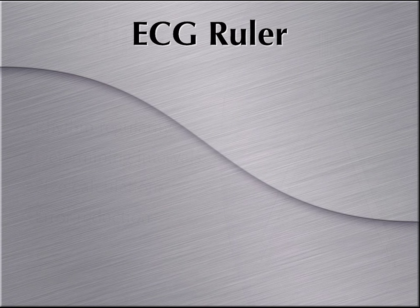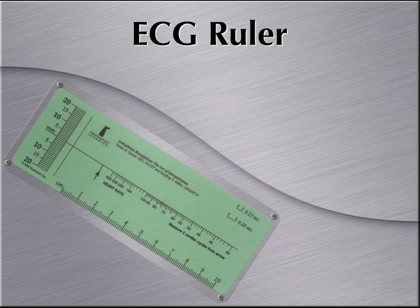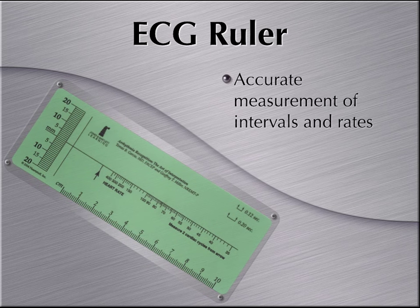Let's move to another useful tool: the EKG Ruler. This is an EKG Ruler that my father provides in all of his books, and it's an extremely useful tool. It provides a very accurate measurement of intervals and rates — you can get an exact distance fairly easily. Most importantly, it helps you obtain a baseline very quickly. Rather than worrying whether the ST segment is slightly elevated or depressed, or whether the PR interval is elevated, you just put the ruler on top of the strip and in one second you can determine the baseline.